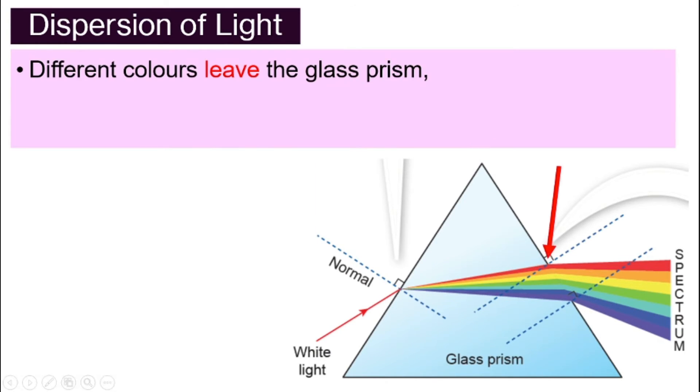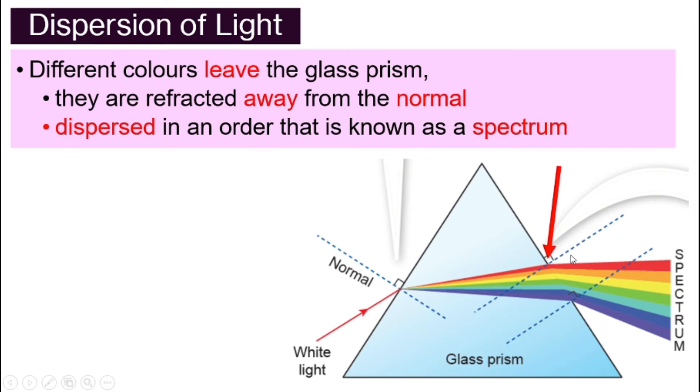And when the different colors leave the glass prism right here, where the arrow indicated, they are refracted further away from the normal line. And then they are dispersed or spread out in an order that is known as spectrum. This is called the spectrum.